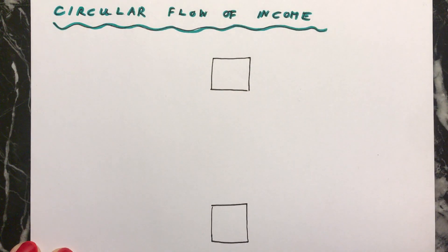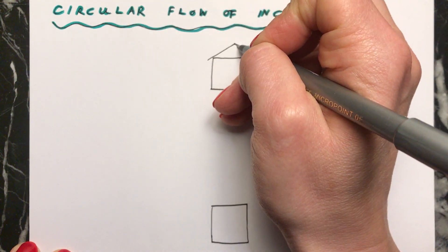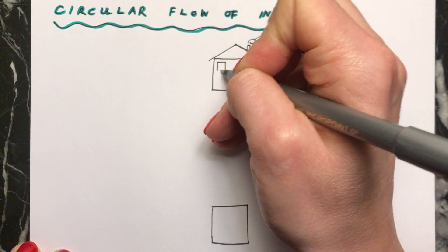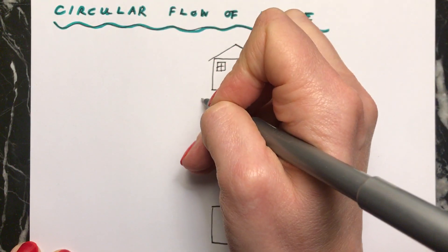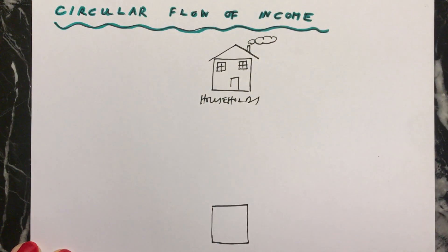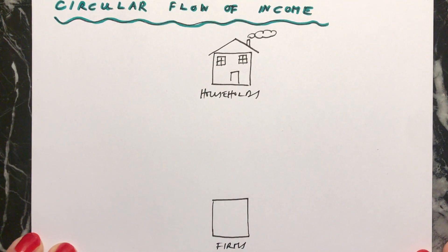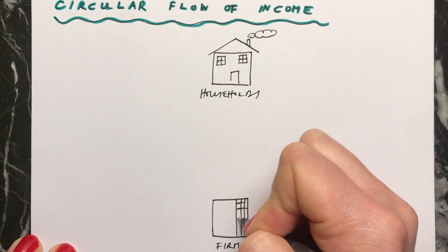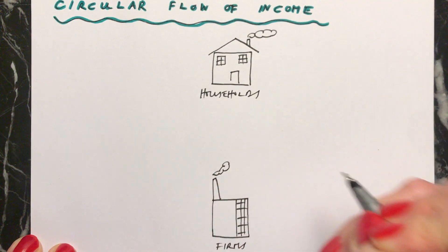In our very simplified economy, we assume that we only have households on the one hand, and at the same time as the households, we also have firms. And firms can be either offices, or they might also be factories, or some other kind of business.